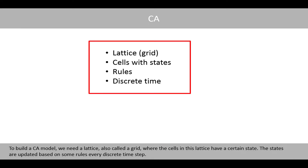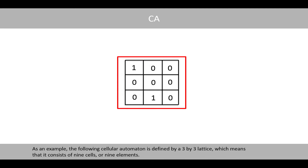To build a cellular automaton model we need a lattice, also called a grid, where the cells in the lattice have a certain state. The states are updated based on some rules every discrete time step. As an example, the following cellular automaton is defined by a 3x3 lattice, which means that it consists of nine cells, or nine elements.